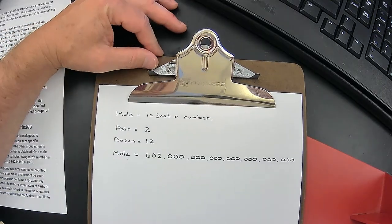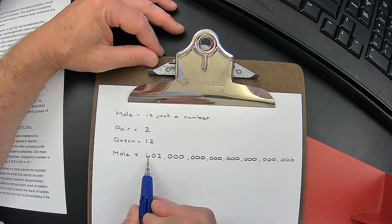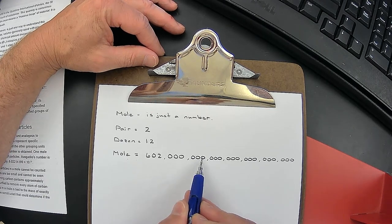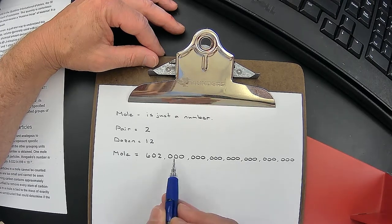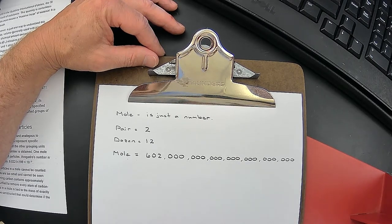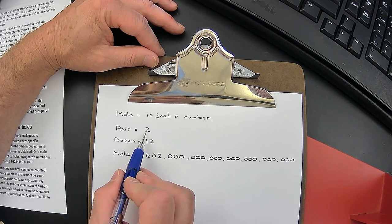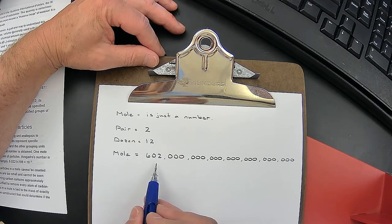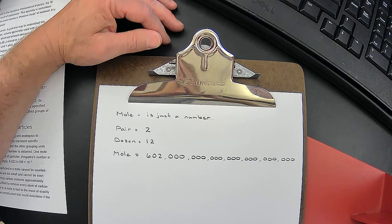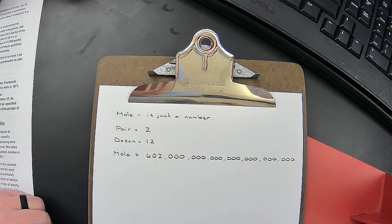I think it's really said 602 billion trillion. It's 602 with seven sets of three zeros after it. We can understand a pair meaning two, a dozen meaning twelve. This is where it gets complicated - a mole stands for 602 billion trillion. But that literally is all that it stands for.